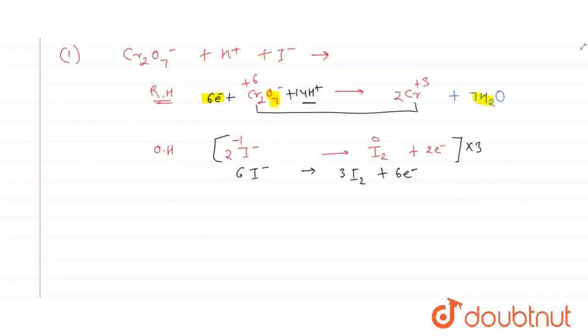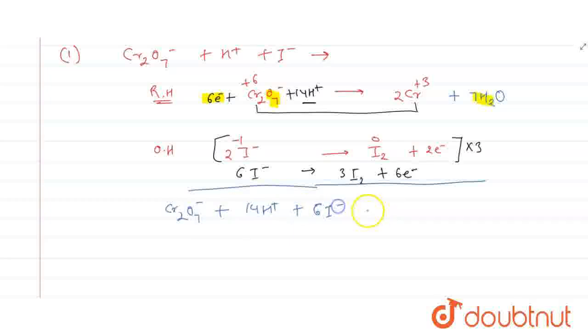Now we will add the reactions and write the final product. So after adding, we will get Cr2O7 2- plus 14H+ plus 6I- will give product 2Cr+3 plus 3I2 plus 7H2O. This is the product.